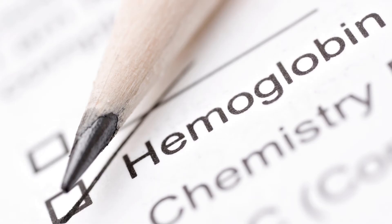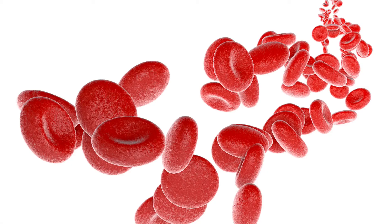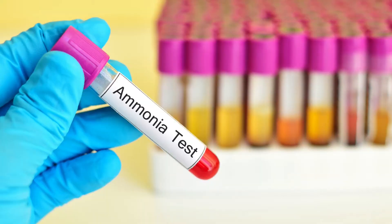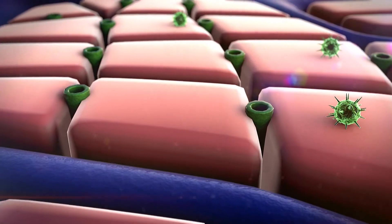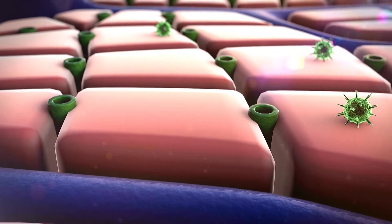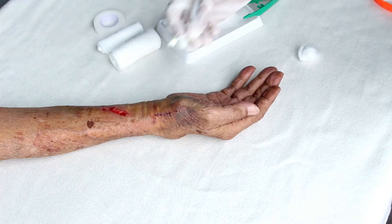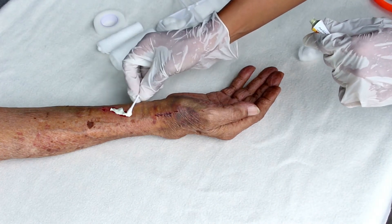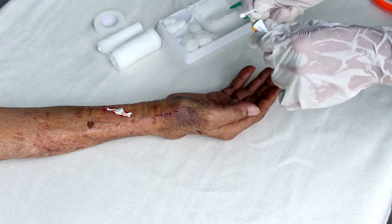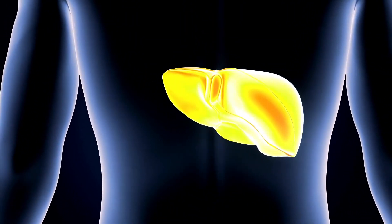The liver processes hemoglobin to use its iron content — your liver stores iron, by the way. It also converts toxic ammonia to urea, which is an end product of protein metabolism and is excreted in your urine. The liver produces immune factors to fend off infections, and bacteria are effectively removed from the bloodstream. Another important task is regulating blood clotting — the healthier your liver, the better wounds heal.